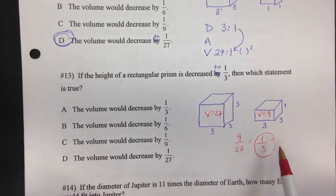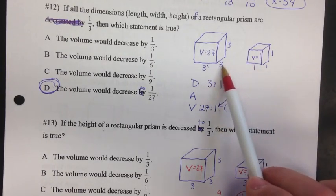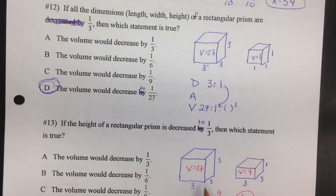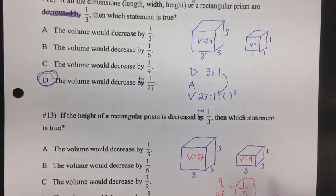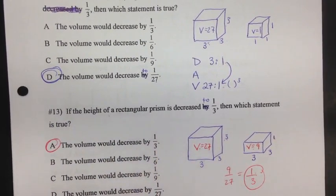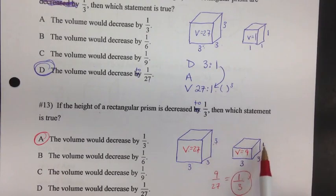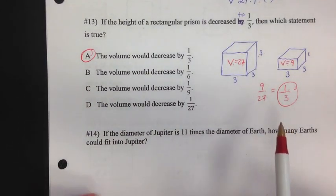Why is it 1/3 and not 1/27 like in problem 12? In problem 12 we decreased every dimension. If you only change one dimension, it's not cubed — it's only one-third. The answer is A: the volume decreases by one-third. If we had changed two dimensions, it would be 1/9. You have to think through how many dimensions are changing.